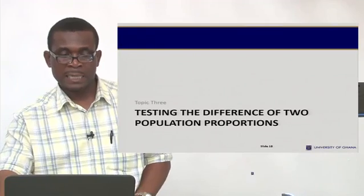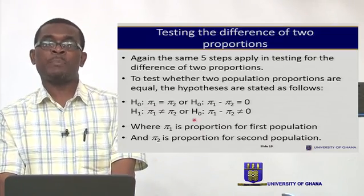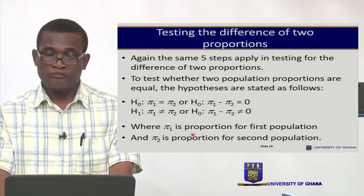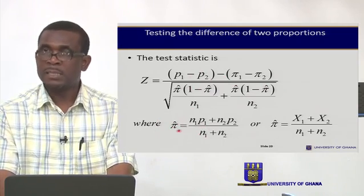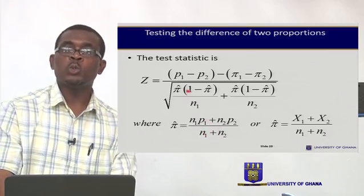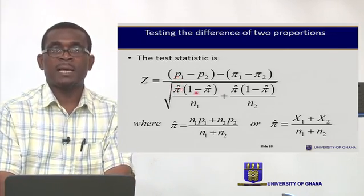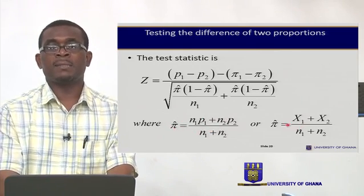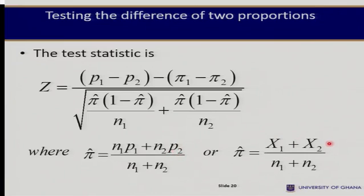Let's move on to testing the difference of two population proportions. The same principles apply. The null and alternative hypotheses are stated accordingly, and the test statistic formula involves pi-hat, which is obtained as the weighted average of the two sample proportions. An alternative way to compute pi-hat uses x1 and x2 directly, since n1 times p1 equals x1 and n2 times p2 equals x2.